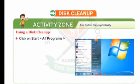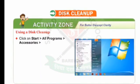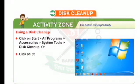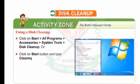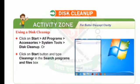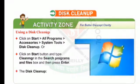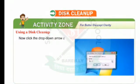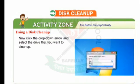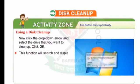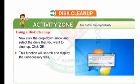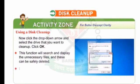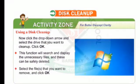Click on Start, All Programs, Accessories, System Tools, Disk Cleanup. Alternatively, click on the Start button and type Clean Manager in the Search Programs and Files box, then press Enter. The Disk Cleanup Drive Selection dialog box will open, asking you to select the drive. Click the drop-down arrow and select the drive that you want to clean up, then click OK. This function will search and display the unnecessary files that can be safely deleted. Select the files that you want to remove and click OK.